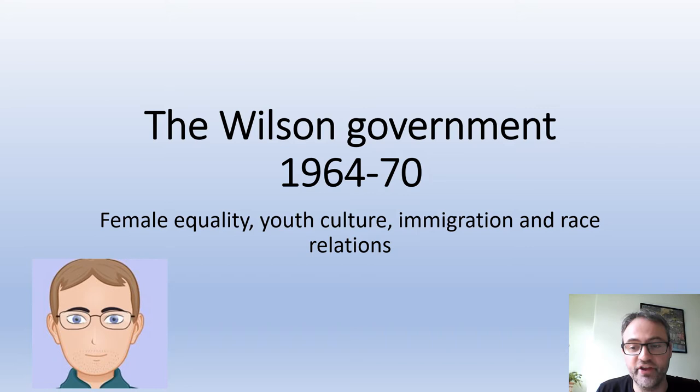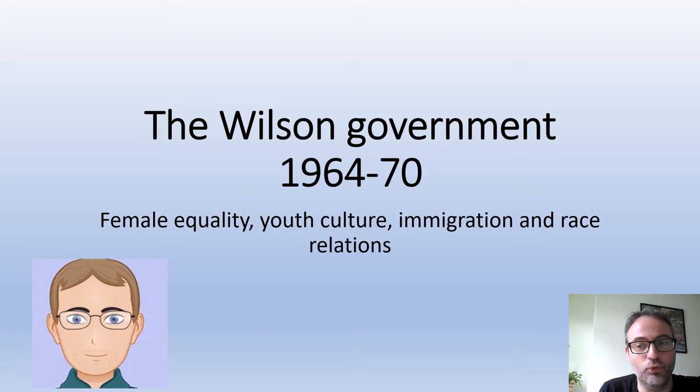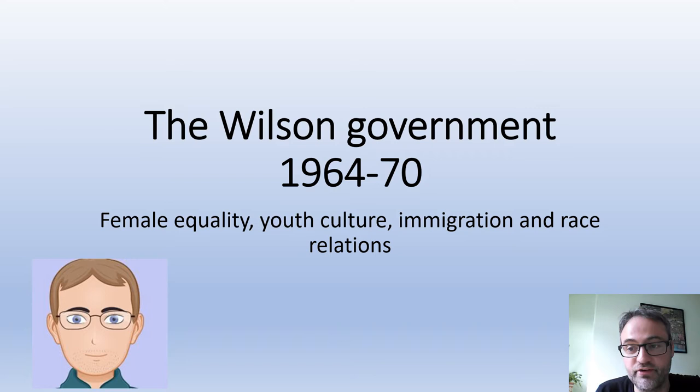Hi everybody and welcome to the latest in our series of videos in the AQA Unit 2S, the making of modern Britain. This is the second of two videos examining social change during the 1960s, specifically the period of 1964 through to 1970, when Harold Wilson led the first of his Labour governments. This video focuses on three key areas of social change: female equality, youth culture, and race relations.